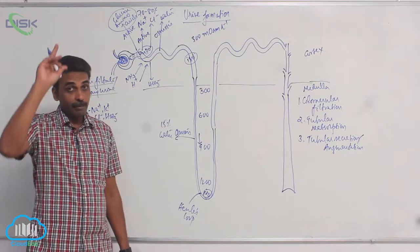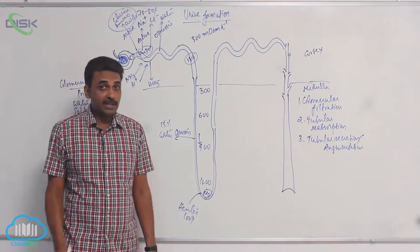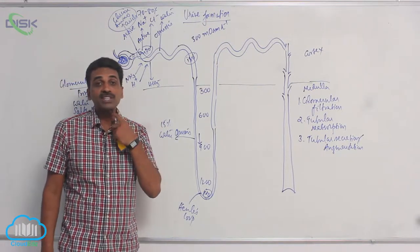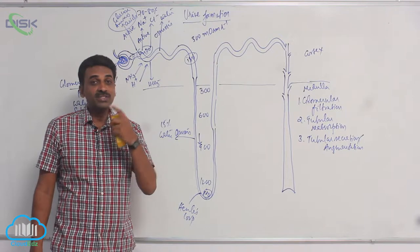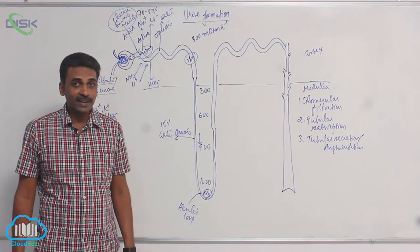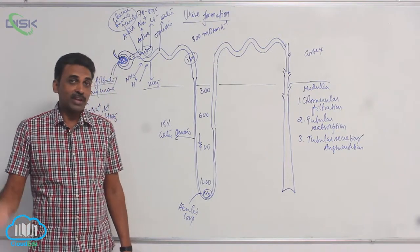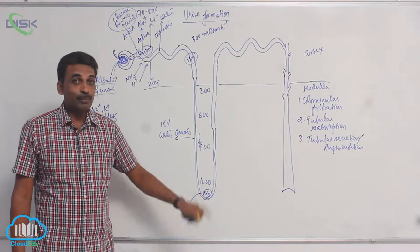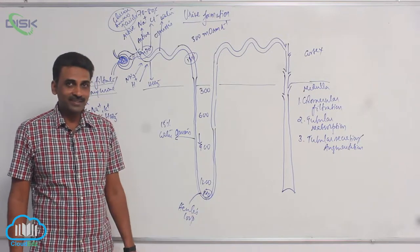However, when compared to blood plasma — whose concentration is around 300 milliosmoles per liter — the fluid at the hairpin bend is hypotonic.